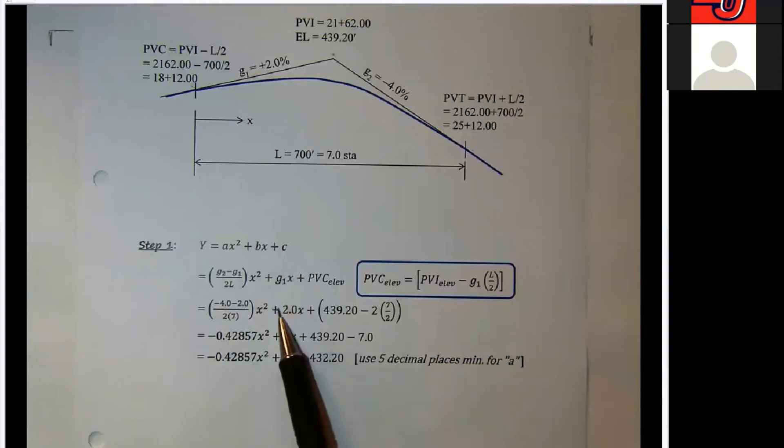Plus the G1 is 2% times X. It could be a negative, you'd put a negative in here if G1 was negative, plus the calculation for the PVC elevation. Just do all the math to do that, and you'll come out with this basic equation down here at the bottom.